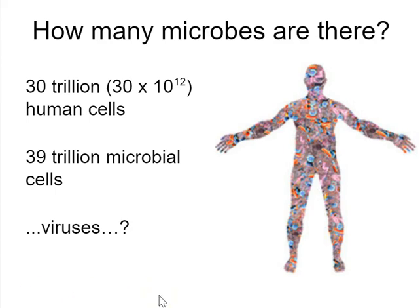Another set of numbers worth sharing — and these have also been argued in the literature — is that on a so-called average human, based around a 70-kilogram, about 2-meter-tall adult male, you would have on the order of magnitude of 30 trillion human cells. And you'd actually have slightly more microbial cells — 39 trillion microbial cells — so roughly a 1-to-1 ratio.